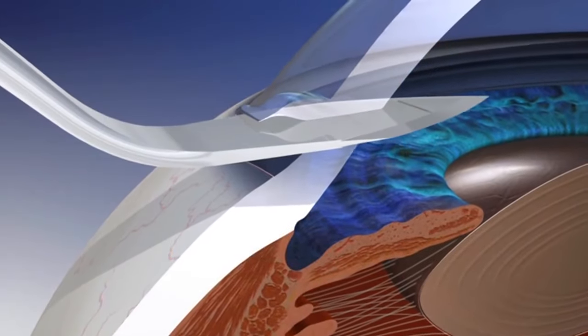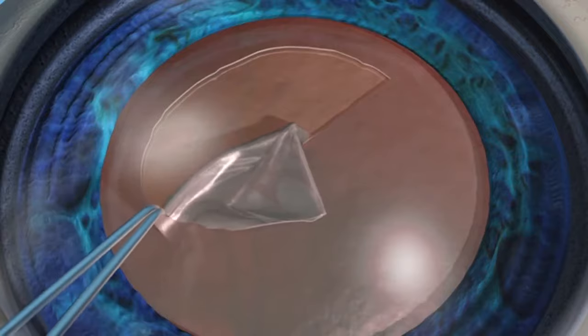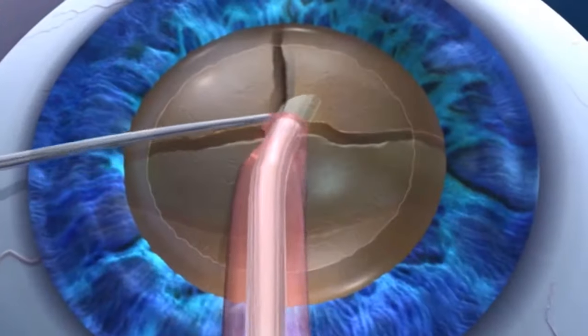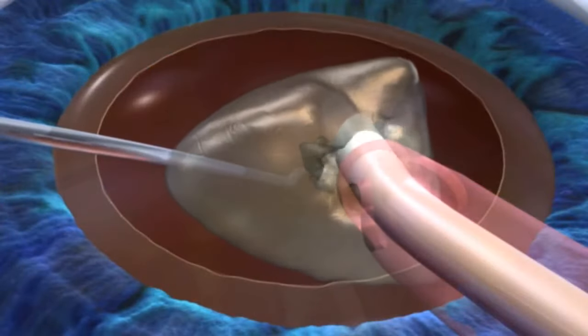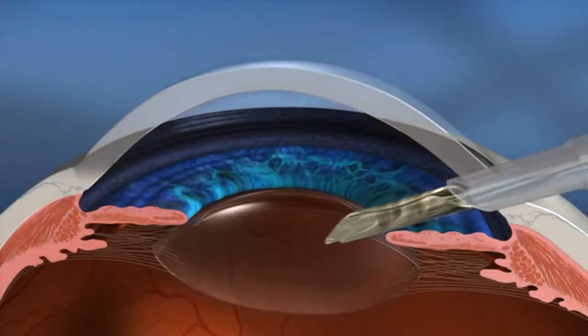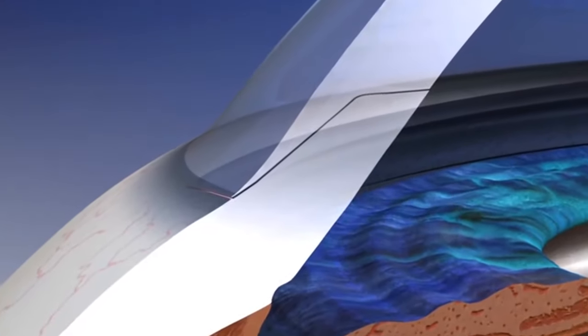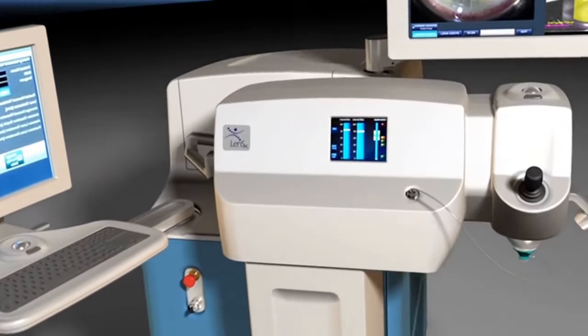Cataract surgery involves corneal incisions, capsular access, a circular hole in the capsular bag, lens fragmentation, phacoemulsification, intraocular lens insertion, and incision closure. The LensX laser can assist with some of the most challenging steps.